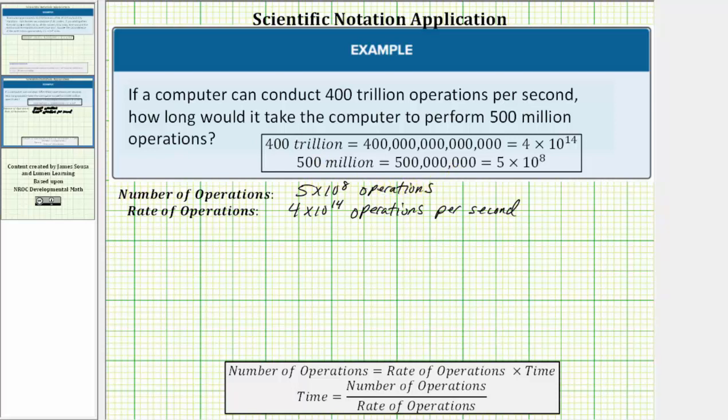Now we have all the information we need to find the time to perform these 500 million operations. The time is equal to the number of operations, which is 5 times 10 to the 8th, divided by the rate of operations, which is 4 times 10 to the 14th.